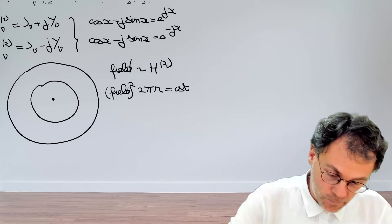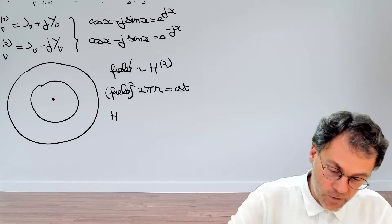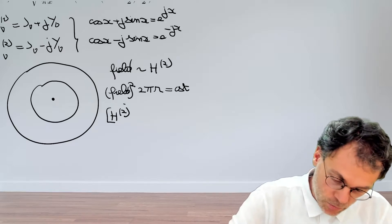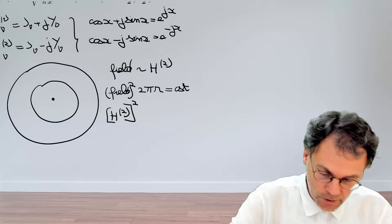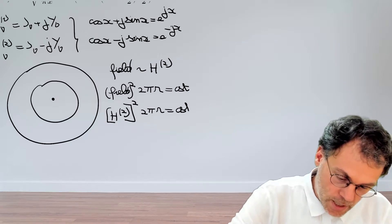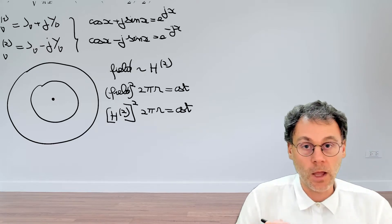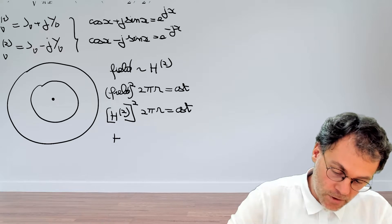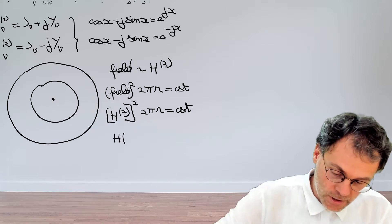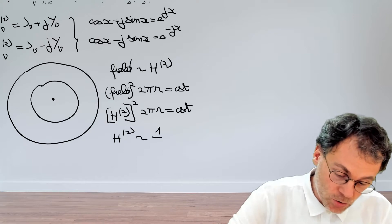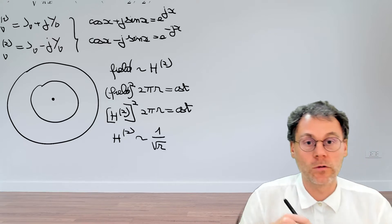Now we just fill out that we know that the field is actually proportional to our Henkel function. And then we square that. That's a bit awkward with these two squares here. So 2πr equal to a constant. But if that's true, then we can just easily derive that our Henkel function itself, so Henkel function of the second kind, is proportional to 1 over the square root of x.